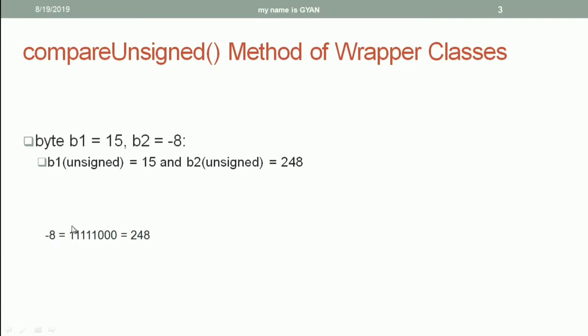And if you do not treat the most significant one as negative weight, you treat it as a positive weight, then you will get this number as equivalent decimal of this binary. So 8 bit binary of minus 8 is 248 when we treat the same binary in unsigned way. That's why in the unsigned way b2 is greater than b1. But in the signed way b1 is greater than b2.